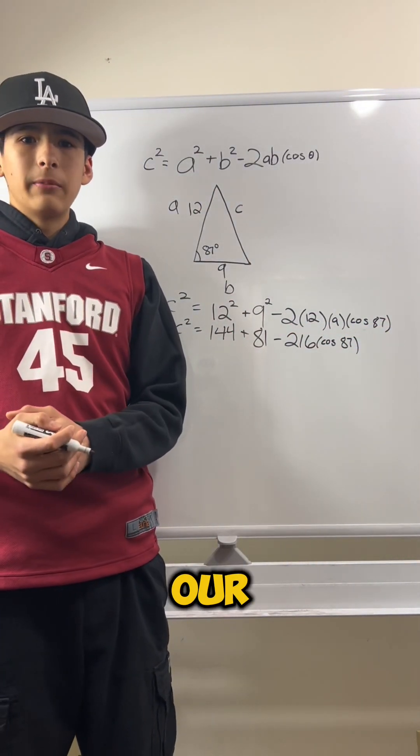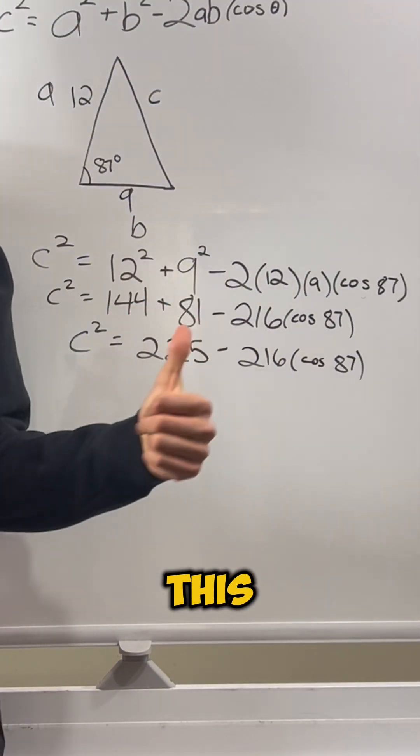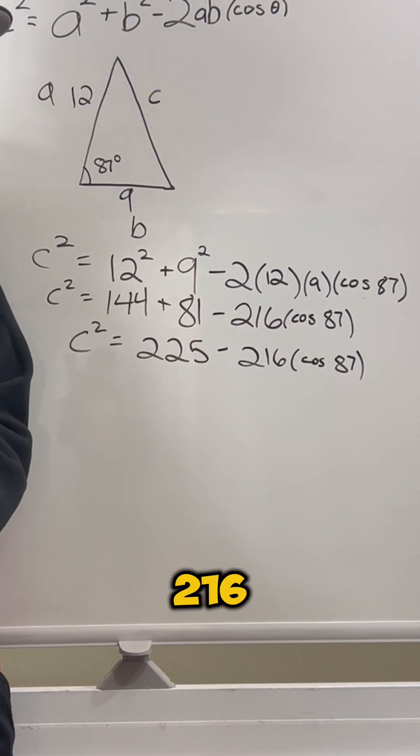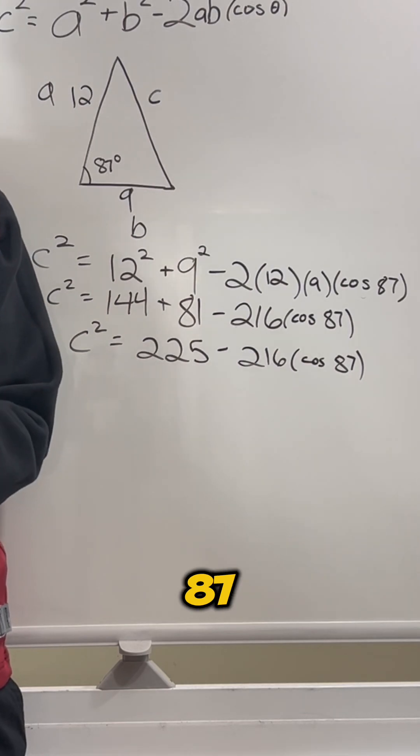Now, using our PEMDAS, this turns into 225 minus 216 times the cosine of 87.